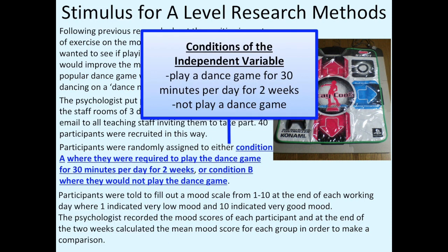Then it says that participants either did condition A, where they were required to play the dance game for 30 minutes per day for two weeks, or condition B, where they would not play the dance game. So that's giving us our independent variable — that's the thing that changes: either they're going to play the dance game or they're not.